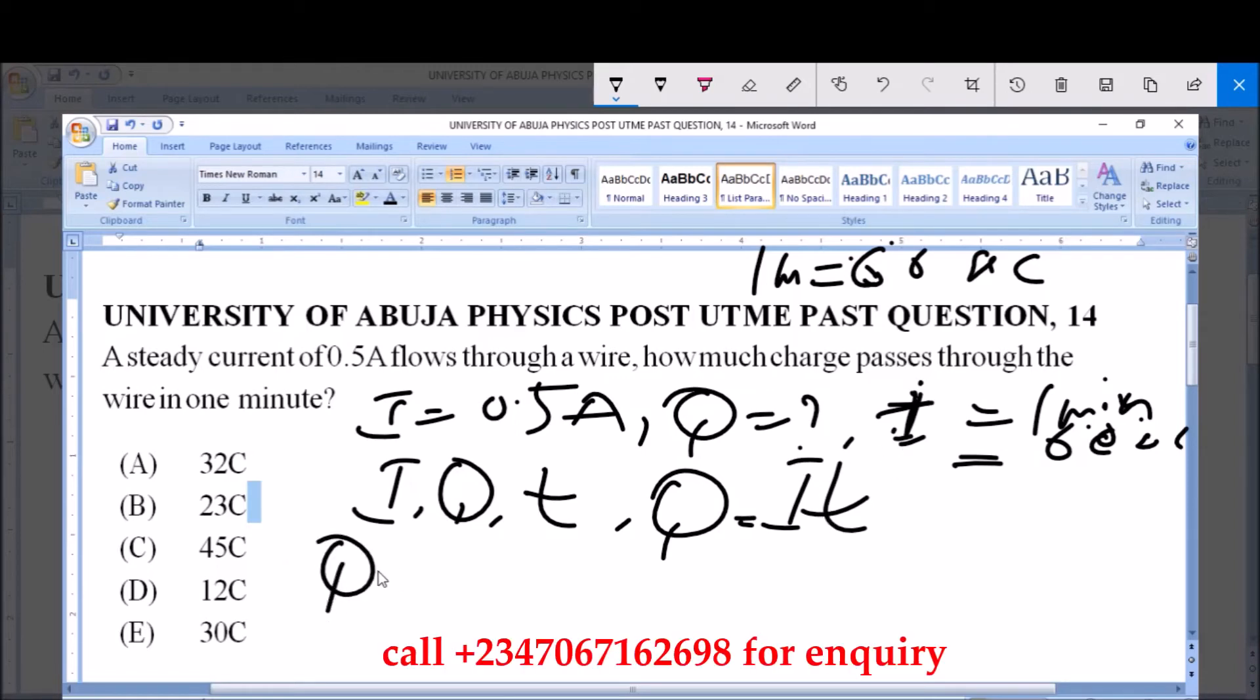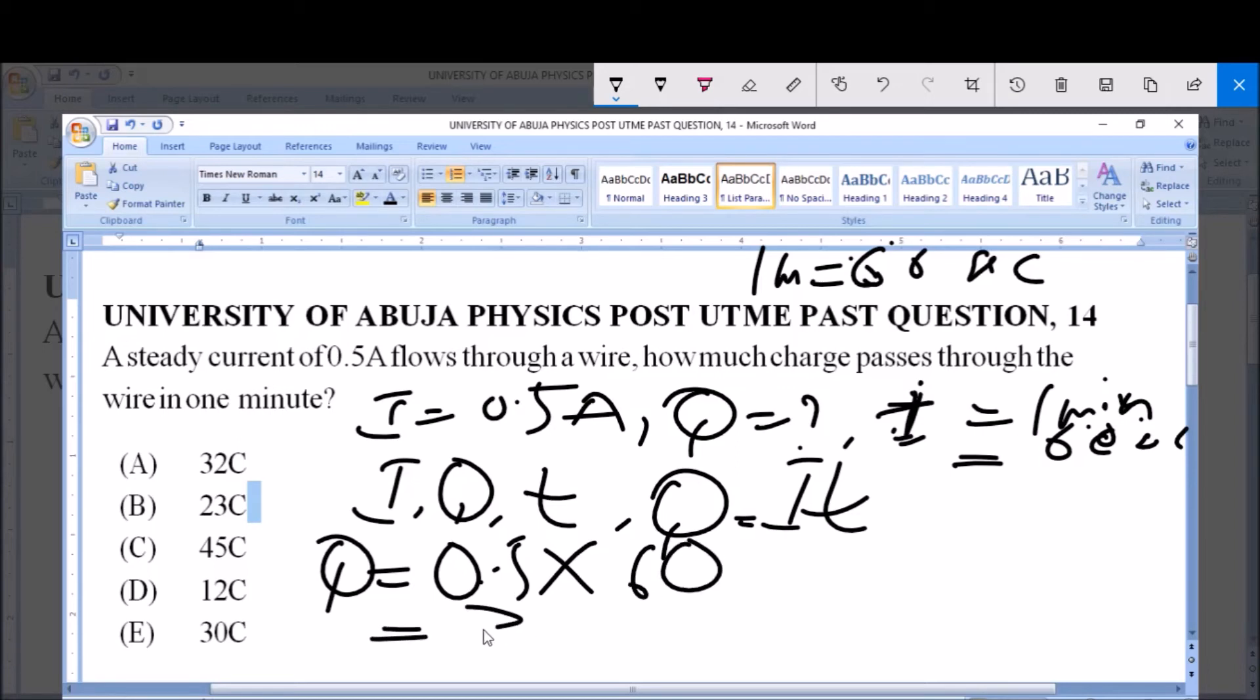We know that our quantity of charge Q is equal to I, which is 0.5, multiplied by T. One minute, we have to convert it to seconds, which is 60 seconds. Now 0.5 multiplied by 60 seconds gives you 30.